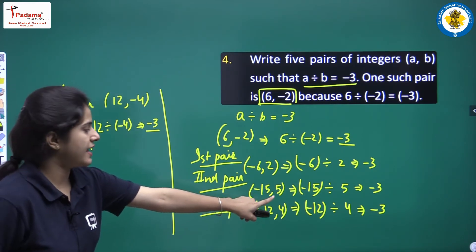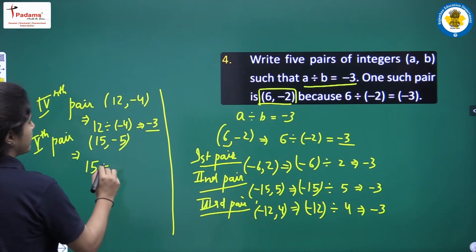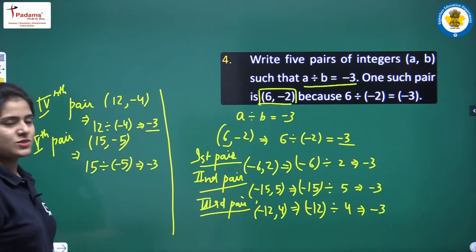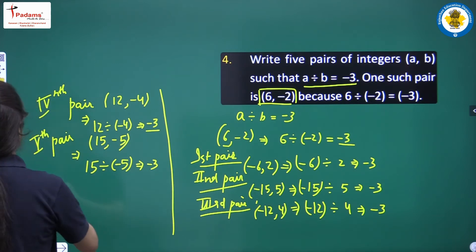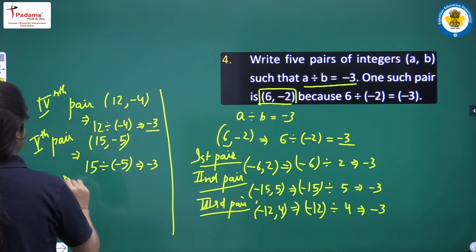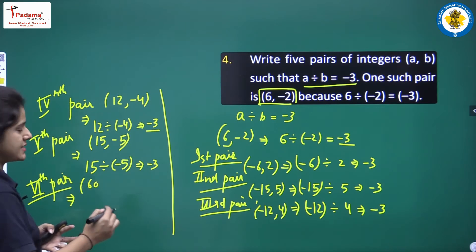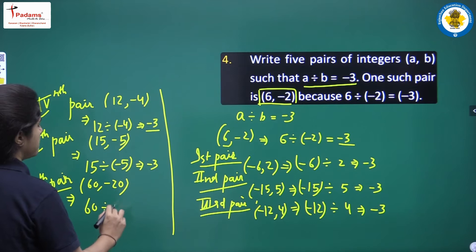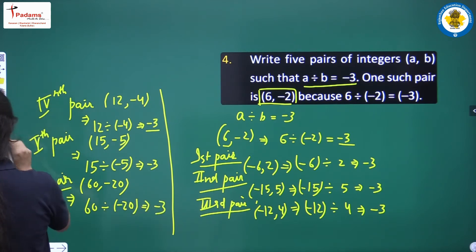The fifth pair is (15, -5): 15 divided by minus 5 equals minus 3. For your convenience, here is a sixth pair: (60, -20) — 60 divided by minus 20 equals minus 3.